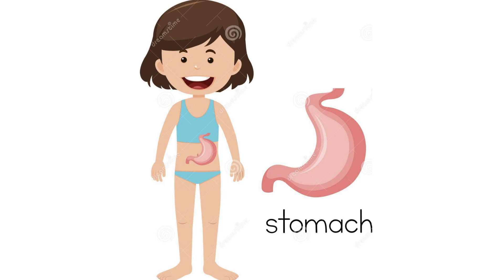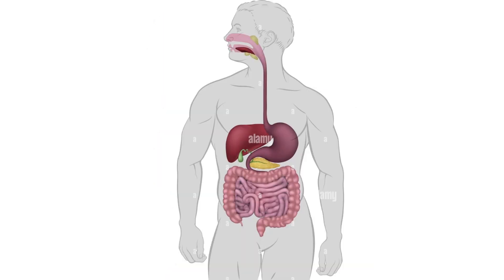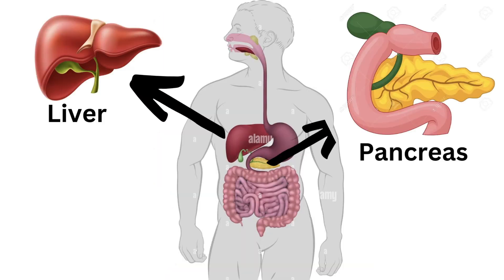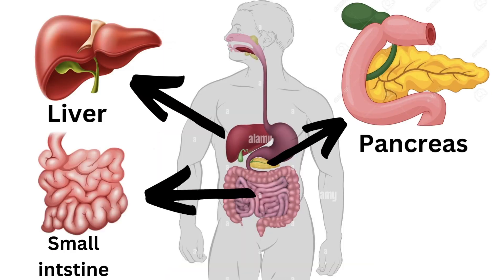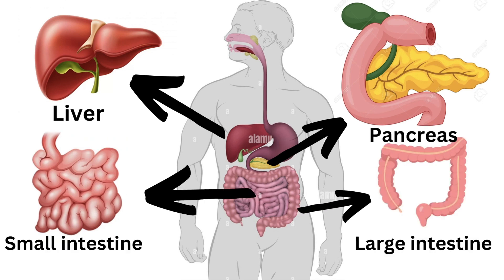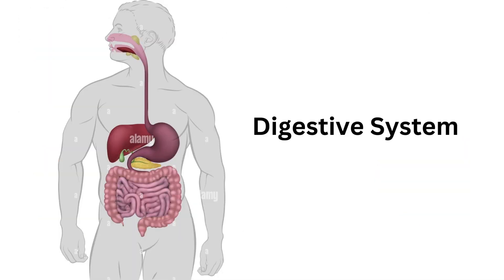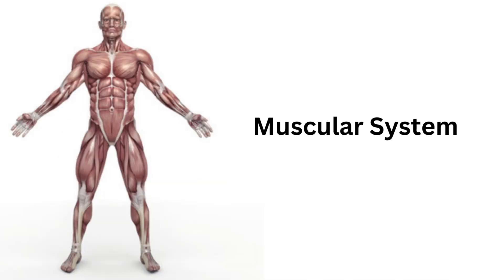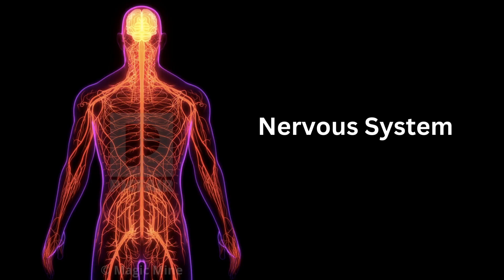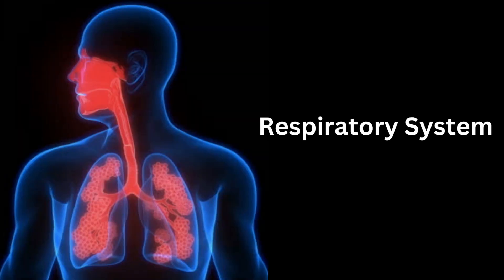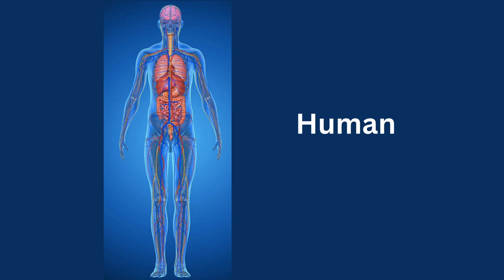Similar to this, many organs are present in the digestive system, like liver, pancreas, small intestine, and large intestine. So these organs come together to form an organ system called the digestive system. Similar to the digestive system, so many other organ systems are in our body, like the muscular system, nervous system, respiratory system, etc., which come together to form an organism called a human.